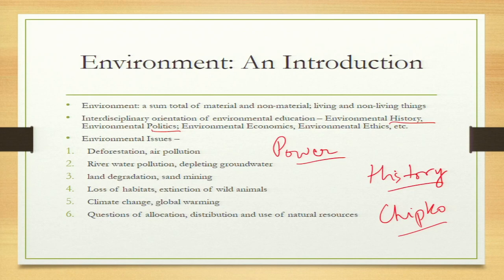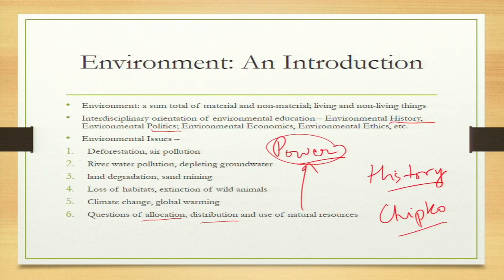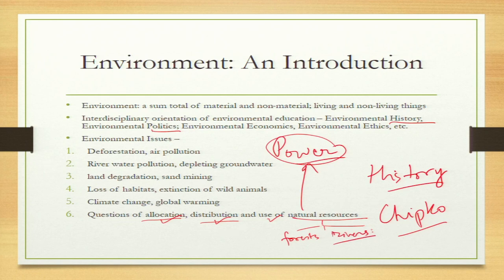The question of who decides who will get what, who will distribute — for instance, if there is a forest or a river, who will decide who uses how much water or who will have control over the forest. These three issues — allocation, distribution, and use of natural resources — are central, because later on all the movements we will study show how these contestations often lead to social movements. This is the range of issues around environment, and we need disciplines like environmental education to study them.